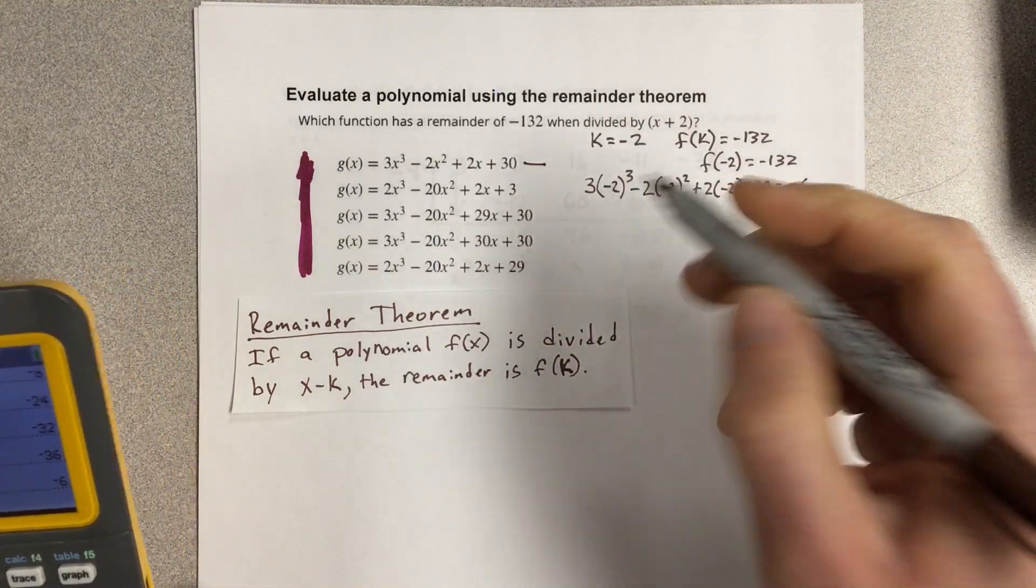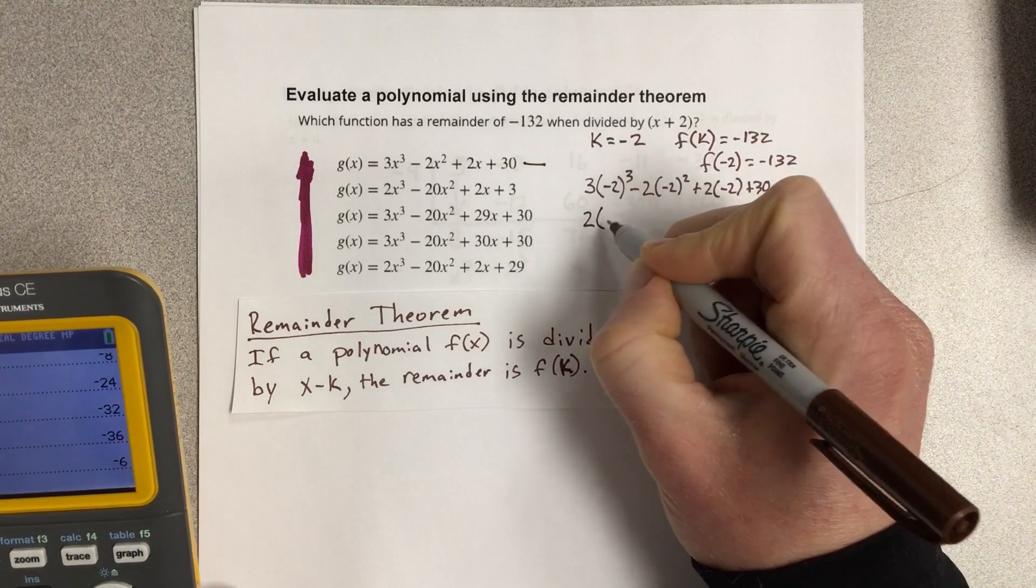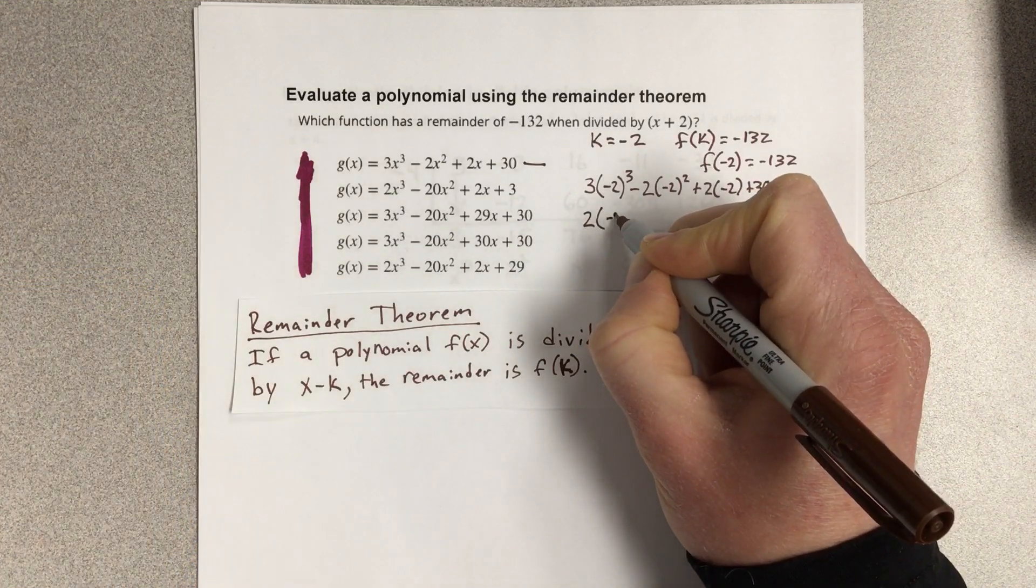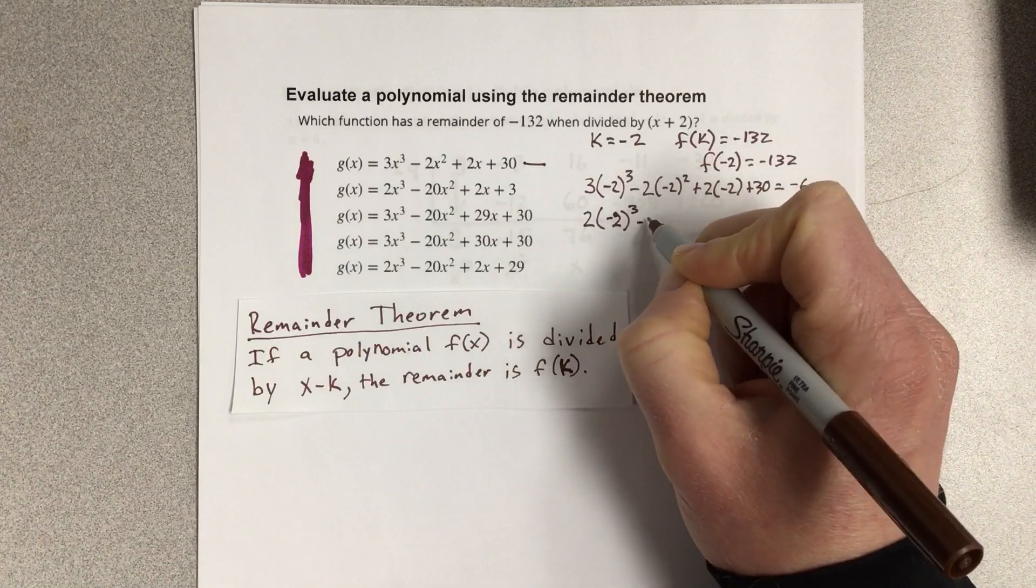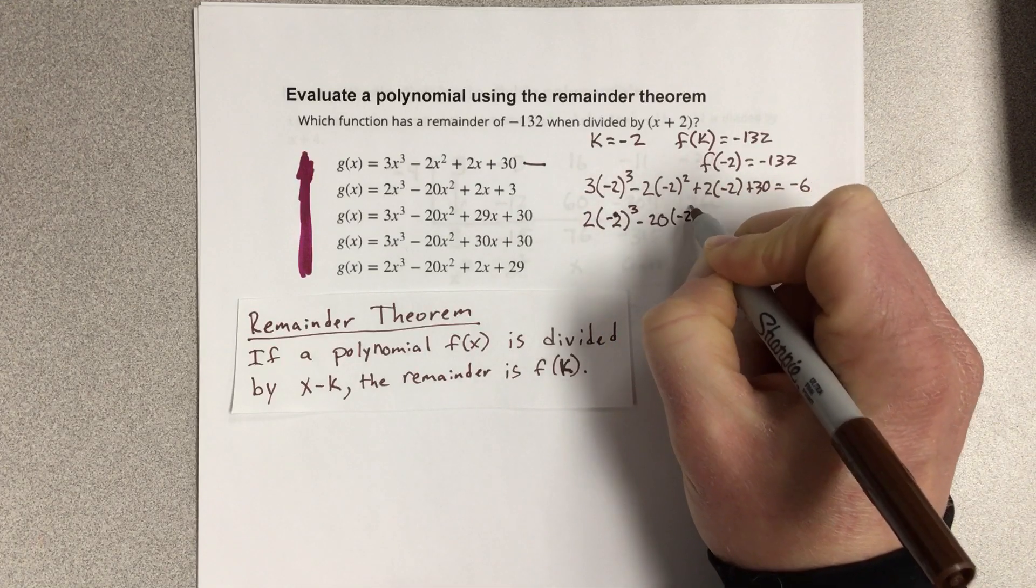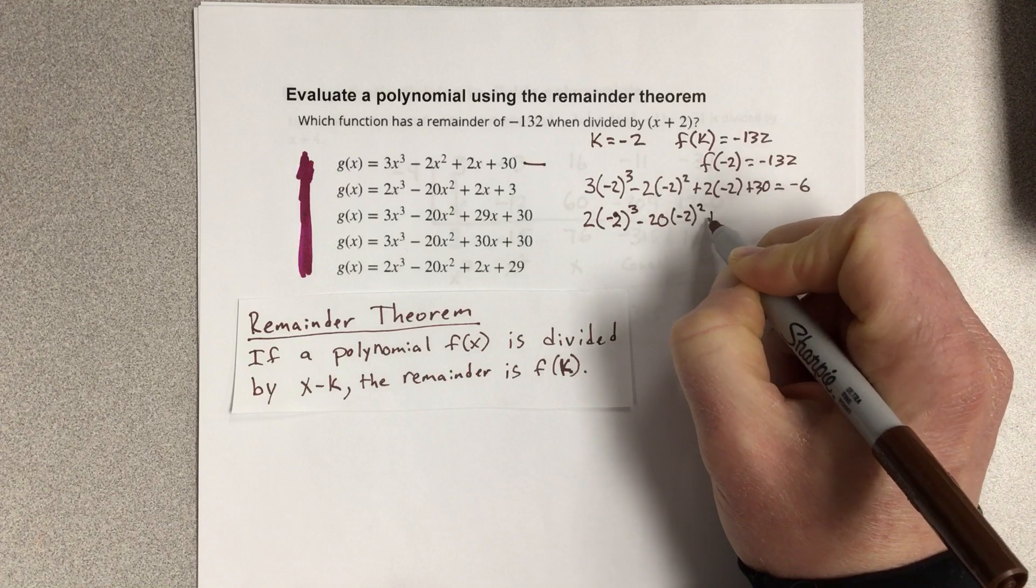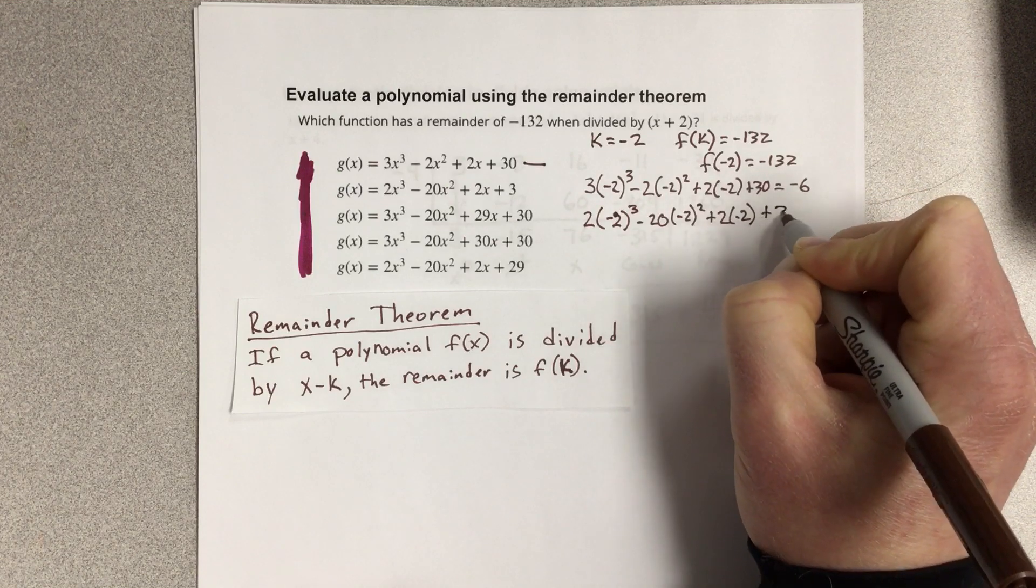I'm just going to put a dash there. Then we try the next one. 2 negative 2 cubed minus 20 negative 2 squared plus 2 times negative 2 plus 3.